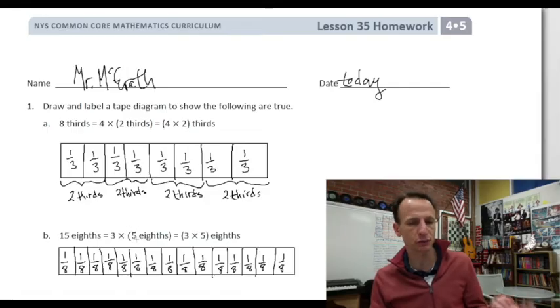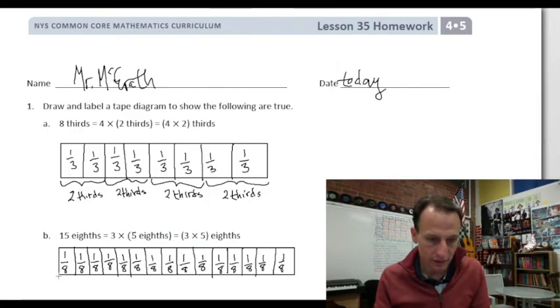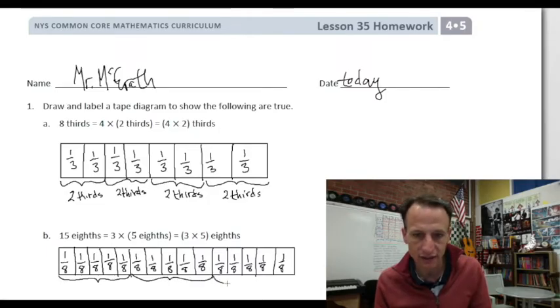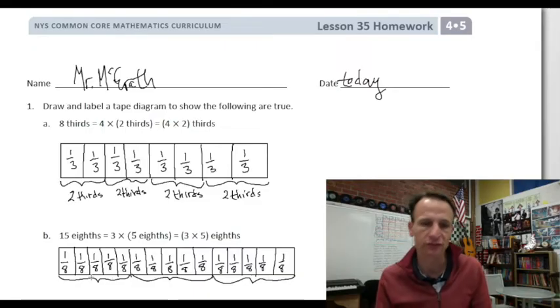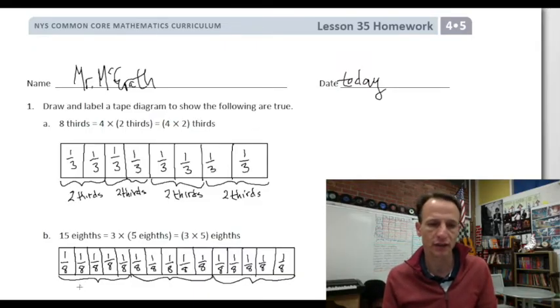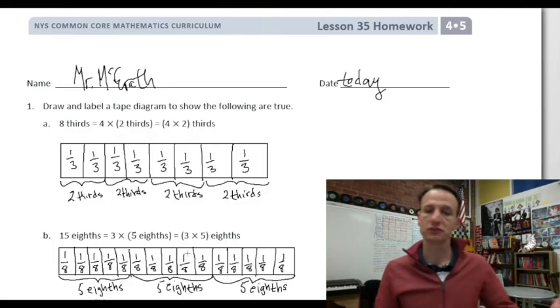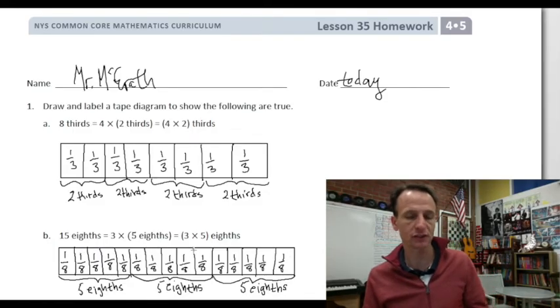I have three groups of 5 eighths. One, two, three, four, five. One, two, three, four, five. And then one, two, three, four, five. I have three groups now of 5 eighths. This tape diagram does indeed show that 3 times 5 eighths is 15 eighths.